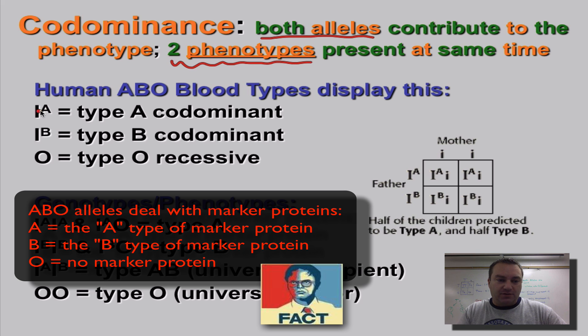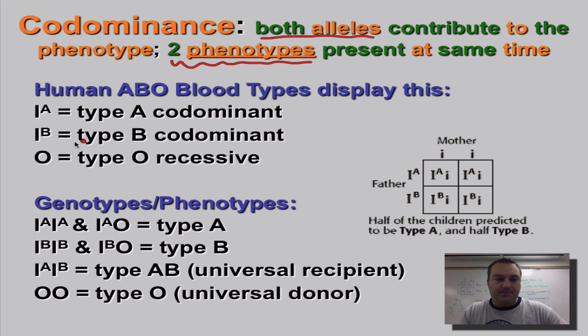And in this case, we do want to use the superscripts on our alleles. So this is a capital letter I. So an I with a superscript A, that's the type A allele, and that's a codominant. I with a superscript B will be your type B allele, which is codominant. And then for O, and sometimes the O is written as just a lowercase i with no superscript, that would be your recessive.